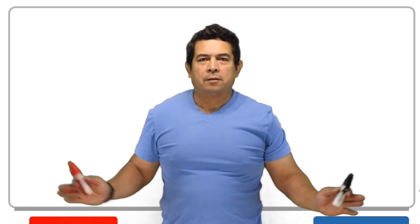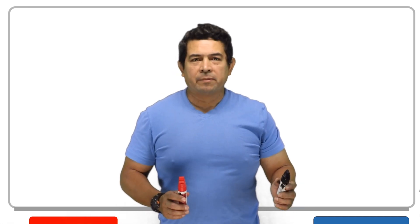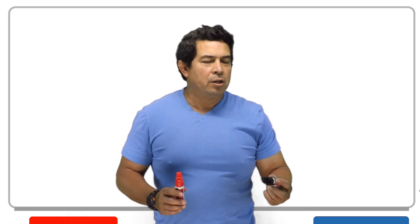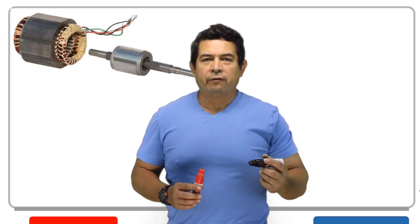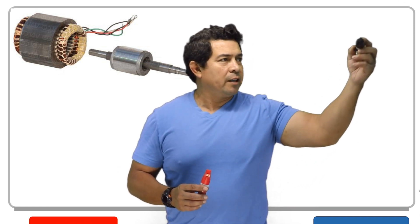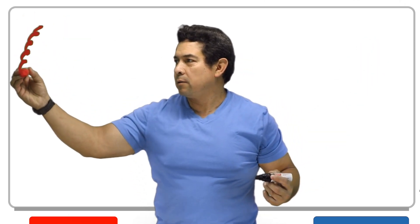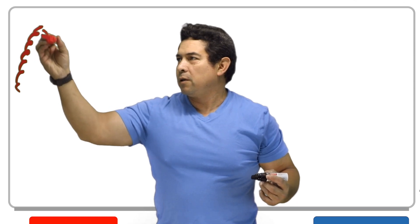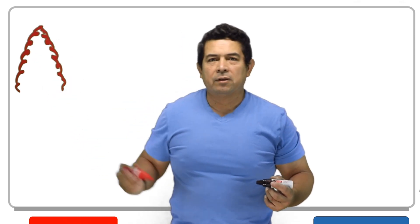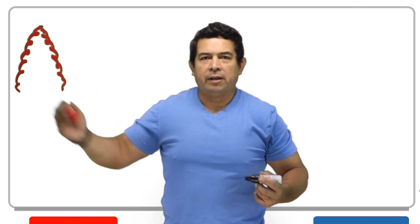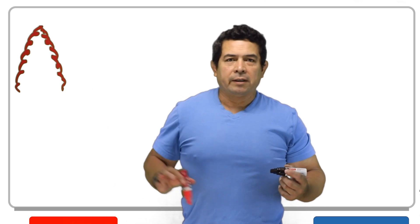On a single-phase motor, what is it that you're going to find? You're still going to find two windings in there — instead of having three, you're going to find two. You're still going to have three connections on it, just like a three-phase motor.